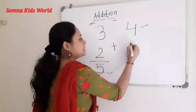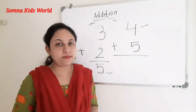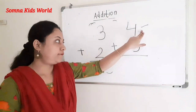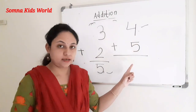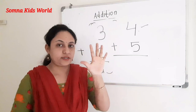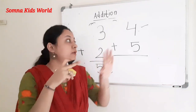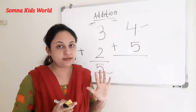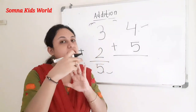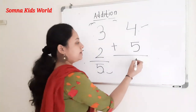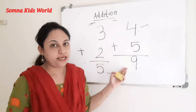One more example: four plus five. Which is the first number? It's number four — keep four in your mind. Now put up five fingers and count after four: five, six, seven, eight, nine. So the answer is nine. Four plus five equals nine.